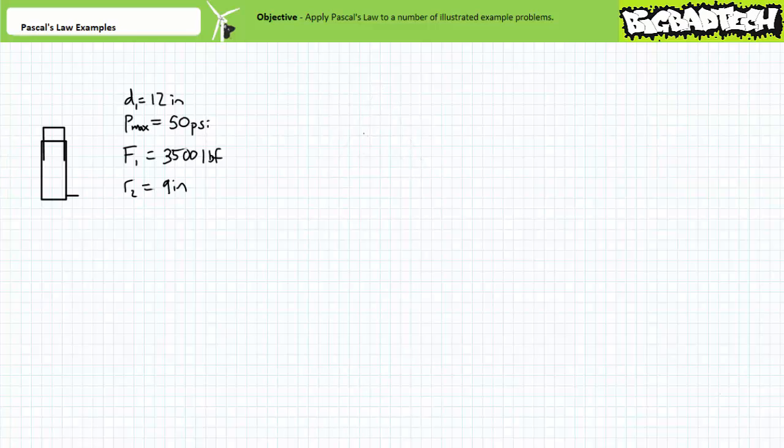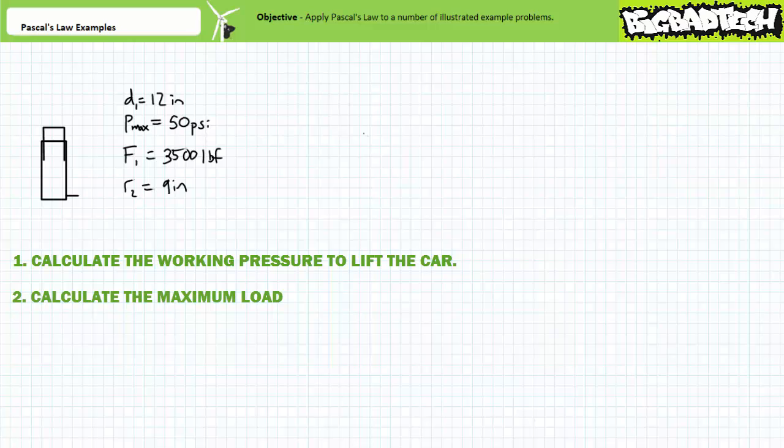First, let's examine an auto lift system consisting of a 12 inch diameter single acting cylinder tasked with lifting a 3,500 pound car. Calculate the working pressure to lift the car. Given maximum pressure is limited to 50 psi, calculate the maximum load the system is capable of lifting. Finally, let's say your boss says he wants to upgrade the system for one with an increased load handling range featuring a single acting cylinder with a 9 inch radius.